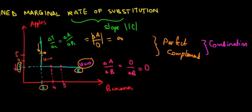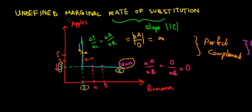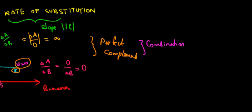We have an undefined marginal rate of substitution because we don't want to basically trade off apples for bananas. We want to have a specific ratio that will make us happy. Hope this makes sense and we are done.